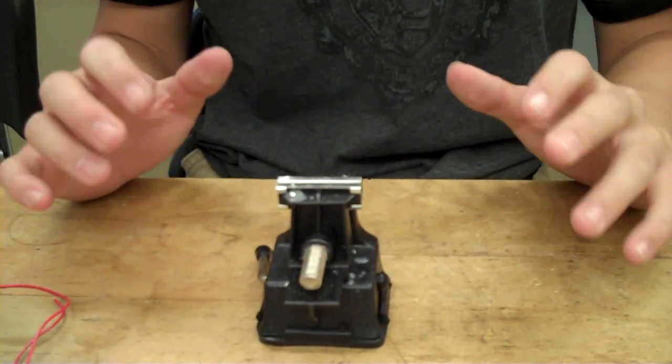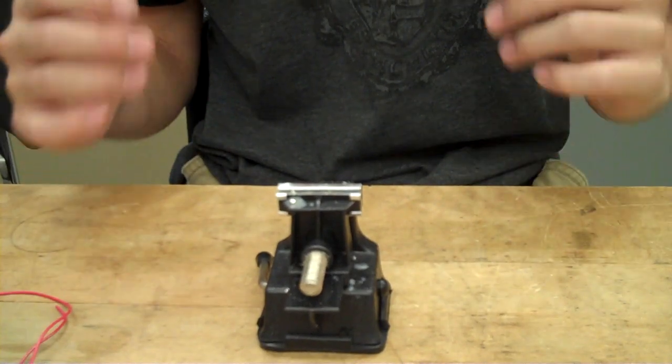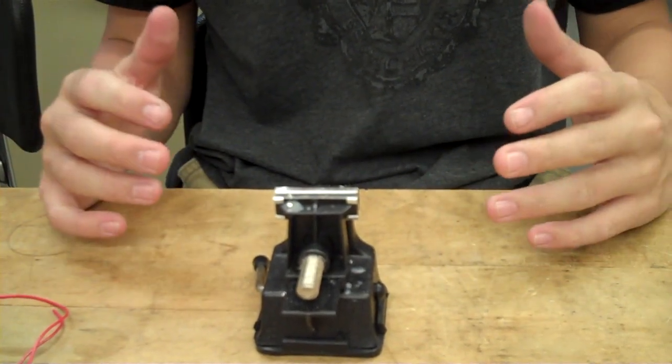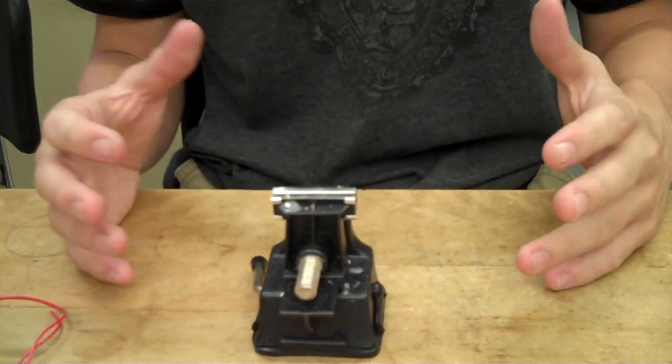The first step to soldering is to make sure you're wearing the appropriate apparel. All loose hair and long hair should be tied up in a ponytail or in a hat, and all loose jewelry and clothing should be taken care of because you will be leaning over hot substances.